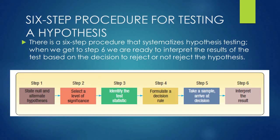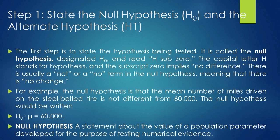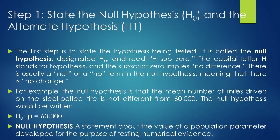Next are the six steps for testing a hypothesis. Step one: state the null and alternative hypothesis. Null means zero — initial or prior information. The first step is to state the hypothesis being tested, called the null hypothesis. It is designated H-naught or H-sub-zero. The capital letter H stands for hypothesis and the subscript zero implies no difference.